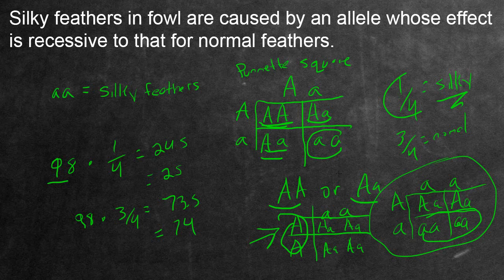So, as a concluding statement, if you crossed the mysterious bird with a bird that had homozygous recessive, the little a's, and all of the offspring were normal, then you know that the mysterious bird has a genotype of AA. But if some of them were silky and some of them were normal, then you know that the mysterious bird has to have a heterozygous genotype.